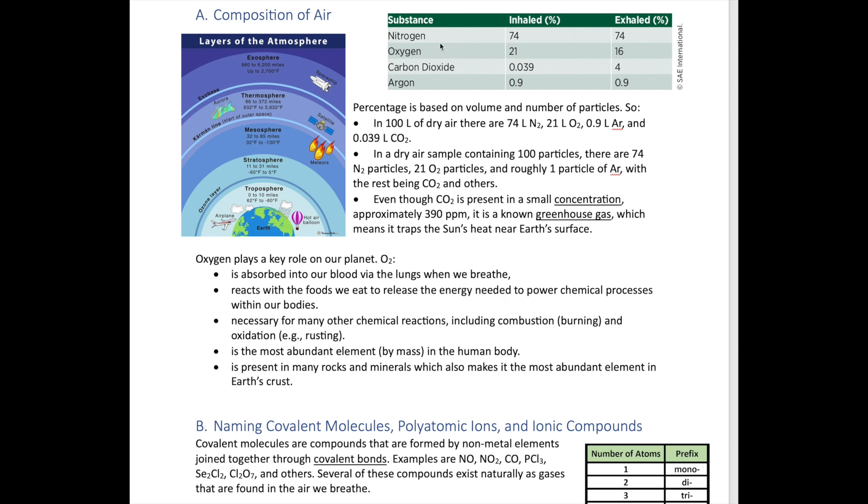Now in terms of the air around us, there are a number of these gases that exist, nitrogen being the most abundant of all of these gases. The amount that you inhale is about 74%, oxygen is about 21% in air, it's also about 21% being inhaled, and then carbon dioxide and argon are in much smaller quantities.